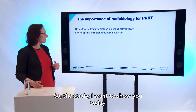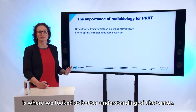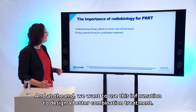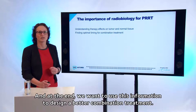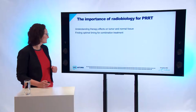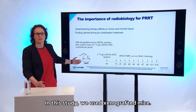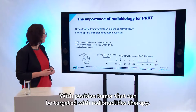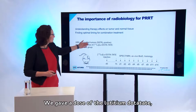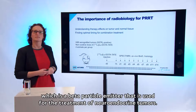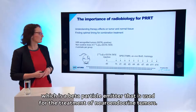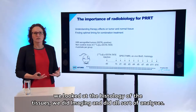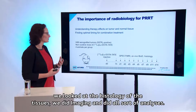The study I want to show you today focuses on better understanding the tumor and normal tissue effects of peptide receptor radionuclide therapy, and ultimately to use this information to design a better combination treatment. In this study, we used xenografted mice with a receptor-positive tumor that can be targeted with radionuclide therapy. We gave a dose of lutetium dotatate, which is a beta particle emitter used for the treatment of neuroendocrine tumors. We sacrificed animals at different time points, looking at tissue histology, imaging, and various analyses.